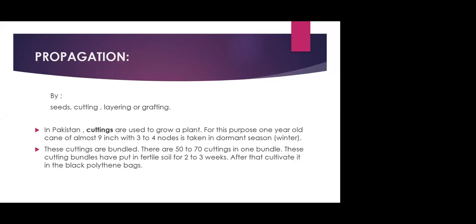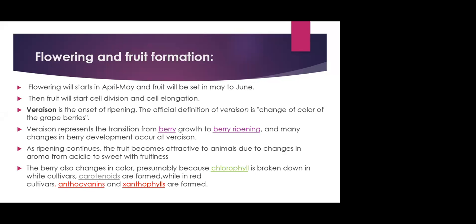When the cuttings have sprouted, they can be placed in polythene bags in the nursery and later transferred to the field. Fruit development starts from April to June, beginning with cell division and cell elongation, until the fruit reaches the ripening stage called veraison.